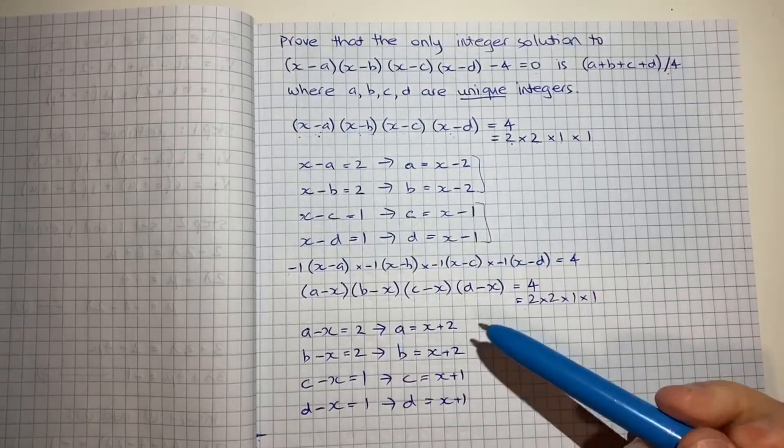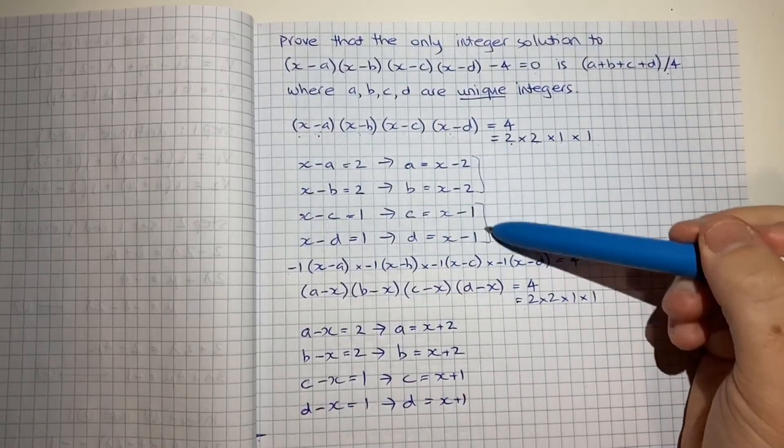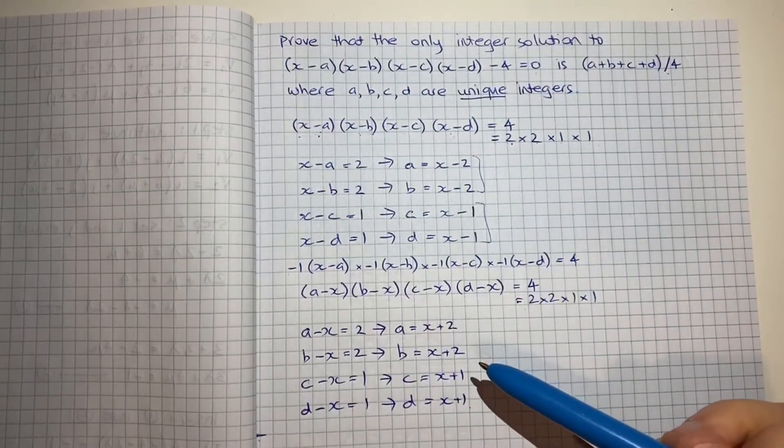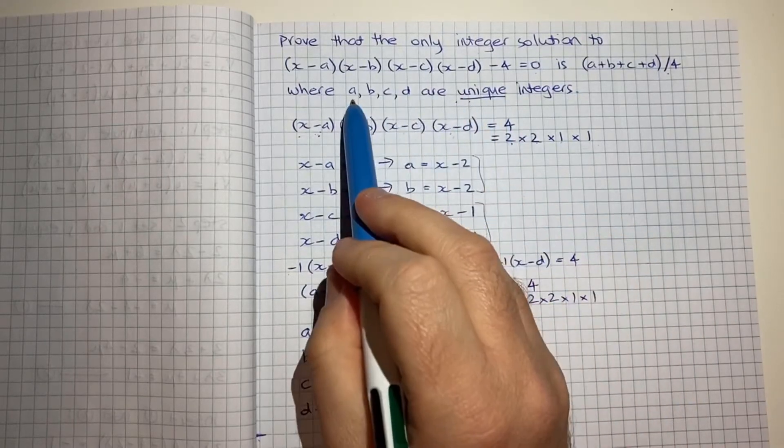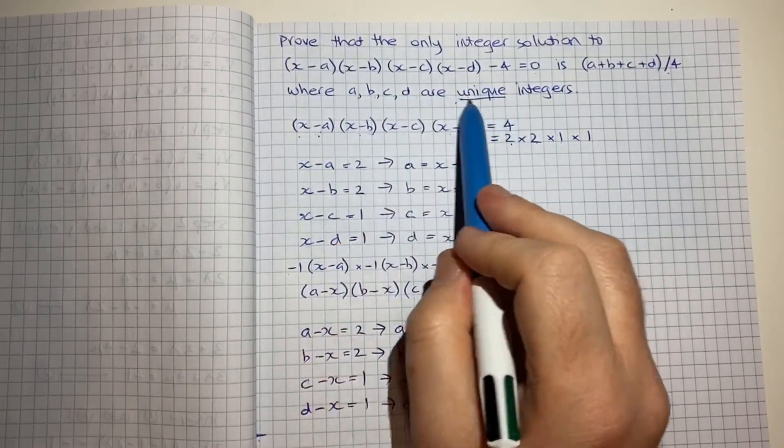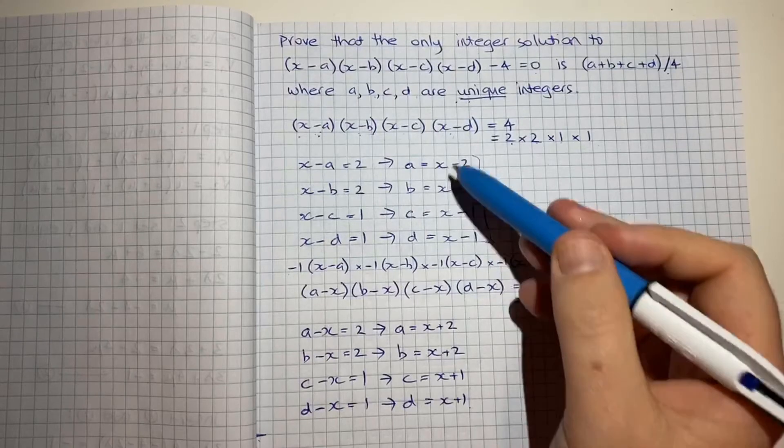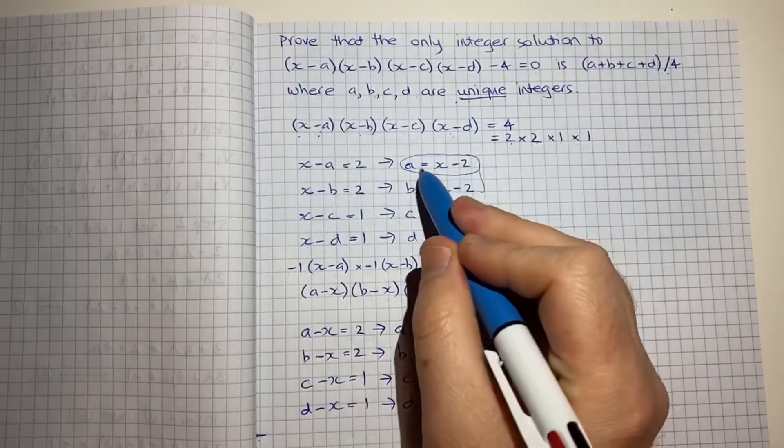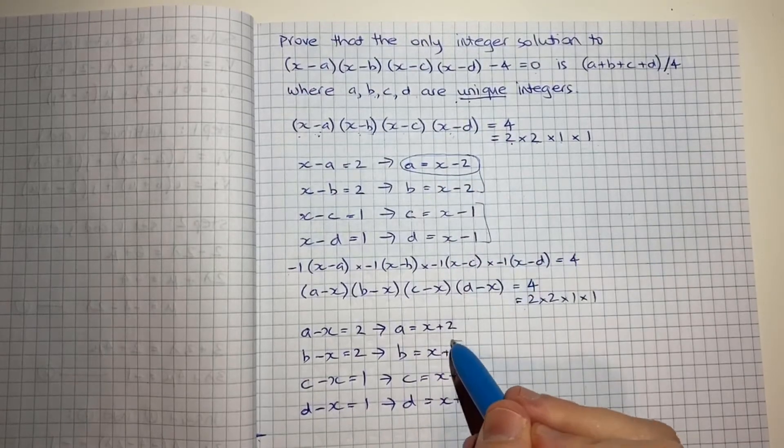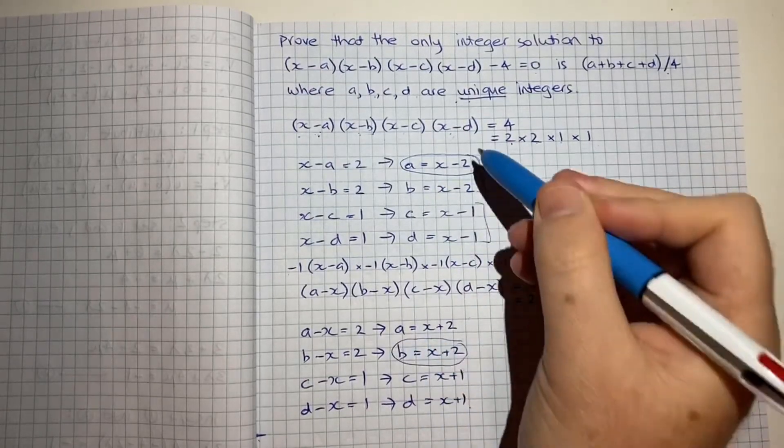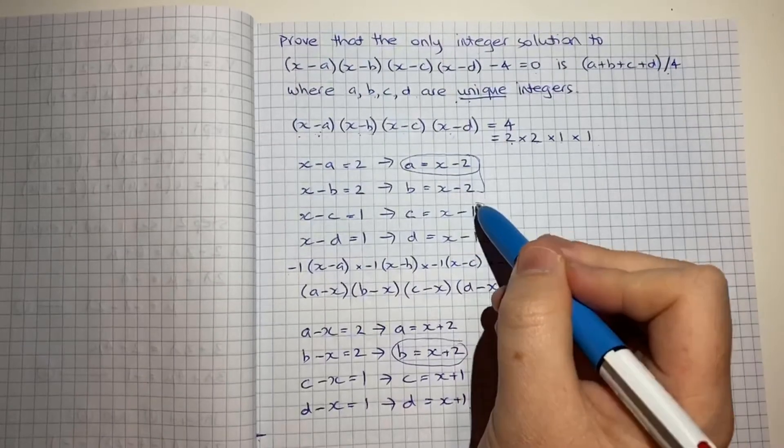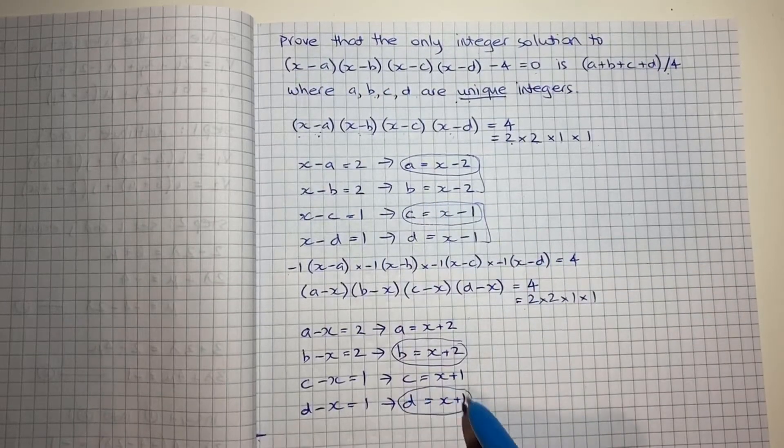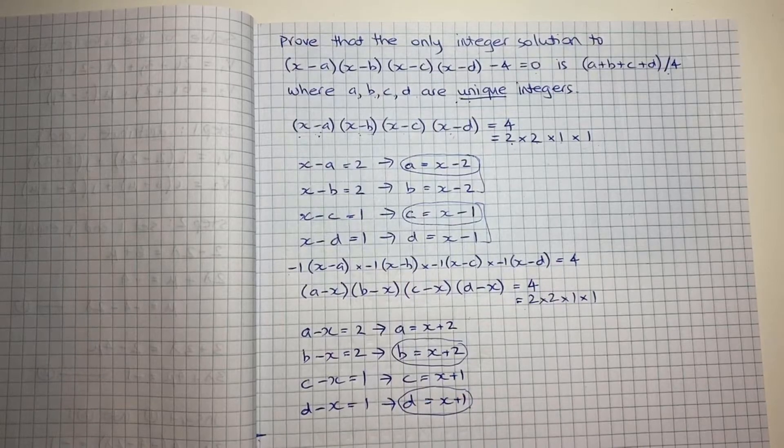Now what I can do is I've effectively laid out two sets of solutions to this equation, but when I want to have the constraint that a, b, c and d are unique, then what I can do is I can just pick. I can say let's take a is x-2, and let's take b as x+2, because now they're not the same. Let's take c as x-1, and d as x+1. And now, just over here, what I'll do is I'll say if these are the solutions, what do we get when we add up a, b, c and d?